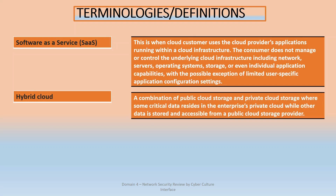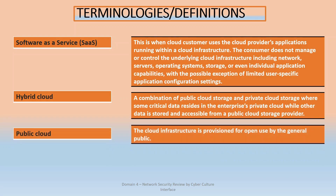Hybrid cloud is a combination of public and private storage, where some critical data resides on the public cloud and some on the private. This is common with organizations that want a backup — they have a copy of their cloud within the organization completely under their control, and some other data on the public cloud for easy access. A mix of private and public makes up a hybrid cloud.